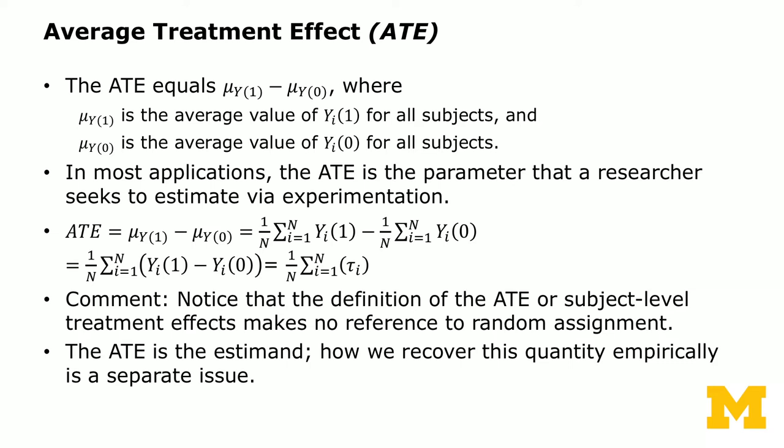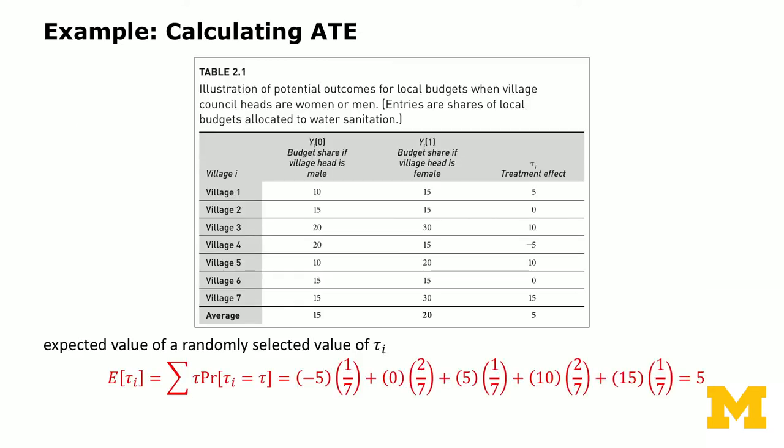Going back to the village council experiment, we look at the treatment effect at the village level and take the expected value of a randomly selected tau_i. Looking at all the treatment effects: one out of seven villages has minus five as the treatment effect, two have zeros meaning no effect, one has a treatment effect of five, two have a treatment effect of ten, and one has a treatment effect of fifteen. The average of that is five.